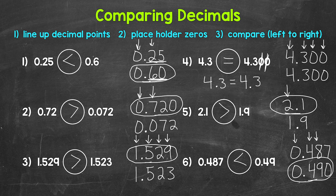So there you have it — that's how to compare decimals. Line up the decimal points, use placeholder zeros if needed, and then compare digits working from left to right, starting at the greatest place value. I hope that helped. Thanks so much for watching. Until next time.